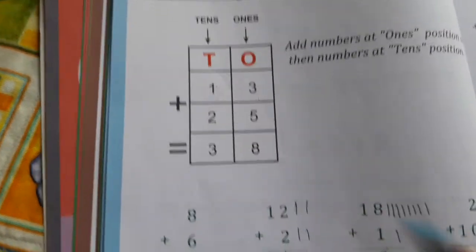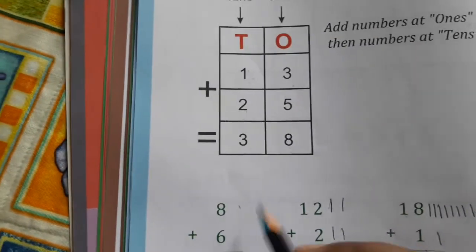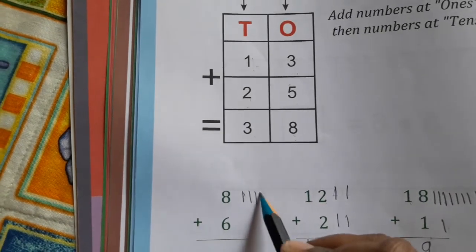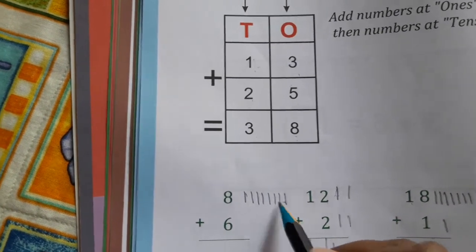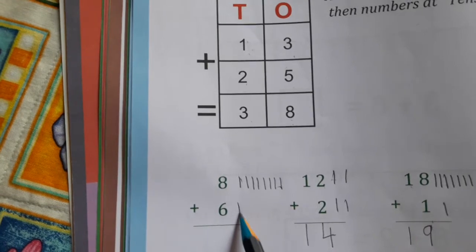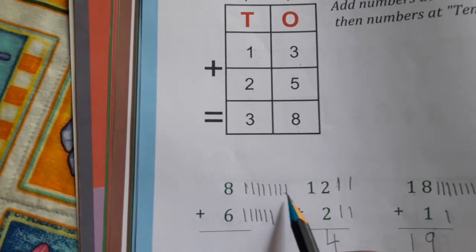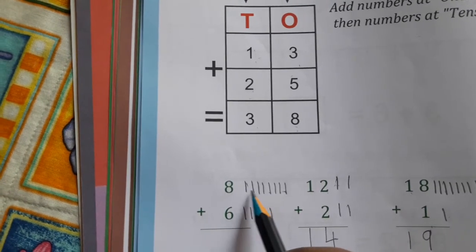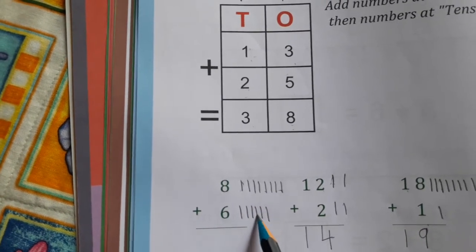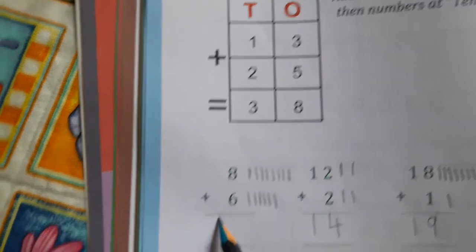Next here 8 and 6. Counting: 1, 2, 3, 4, 5, 6, 7, 8. And here 6: 1, 2, 3, 4, 5, 6. Now count them: 1, 2, 3, 4, 5, 6, 7, 8, 9, 10, 11, 12, 13, 14. Right, here 14.